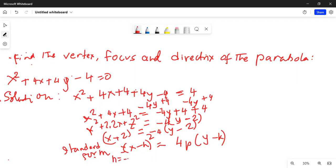h is equal to minus 2 and 4p is equal to minus 4 which leads to p equal to minus 1 and k is equal to 2.